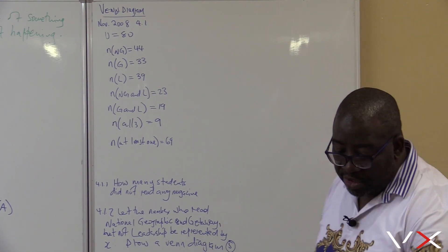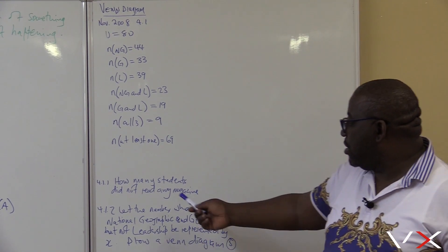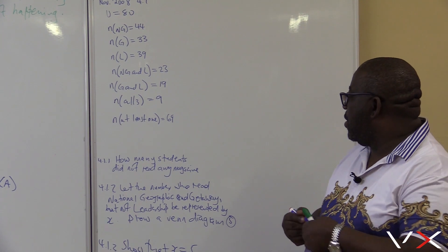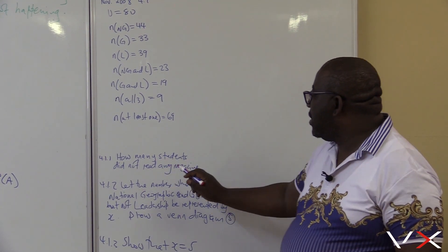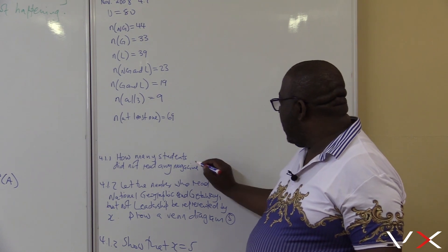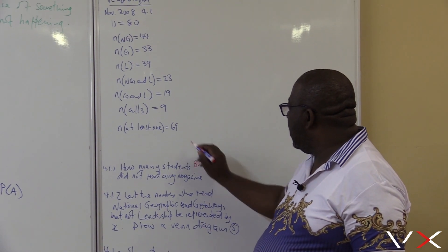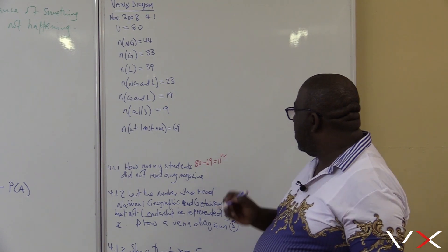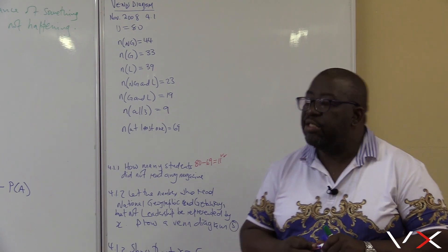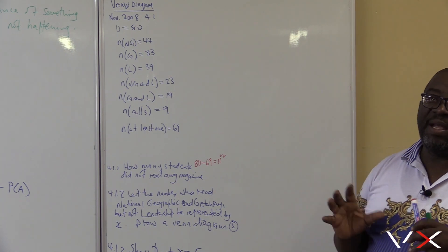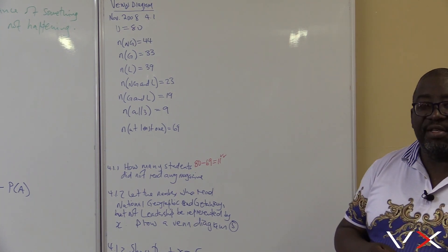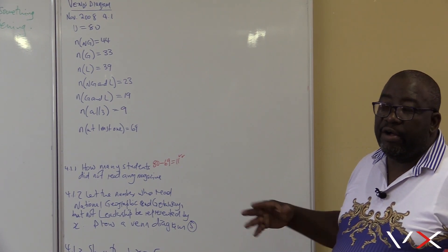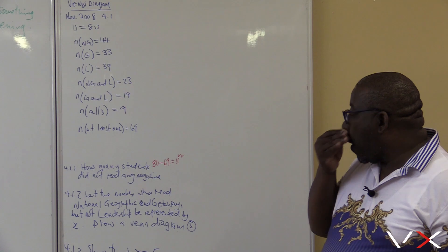Now let's look at the questions. Question number one: how many students did not read any magazine? The number of students who did not read any magazine will be 80 minus 69, which gives us 11. There are 11 who did not read any magazine. We know that 11 were not participating in reading these magazines, and we will put them in the right-hand corner of our box.